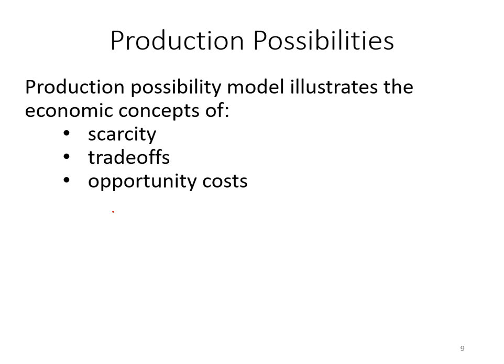These concepts also built a foundation for our first economic model, which is called the production possibilities — or the production possibility curve. The production possibility model will illustrate the concepts of scarcity, trade-offs, and opportunity cost. Later I will show you an example of how we can find scarcity, trade-offs, and opportunity cost from the production possibility curve.